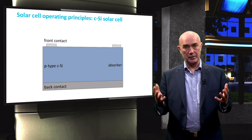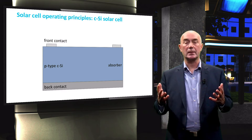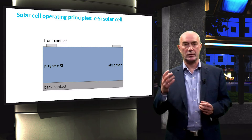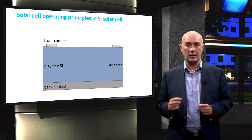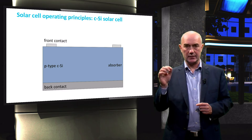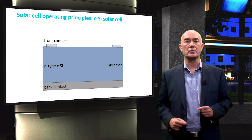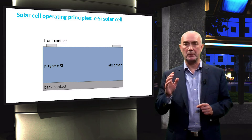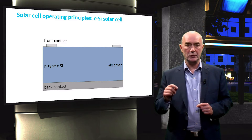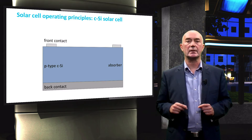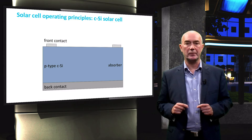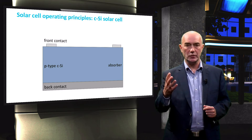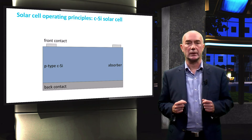A crystalline silicon solar cell is typically made of a wafer of silicon that serves as the light absorber. In most crystalline silicon solar cells used in industry, this wafer is P-type. What you see now is a P-type crystalline silicon wafer acting as a light absorber with front and back electrical contacts.